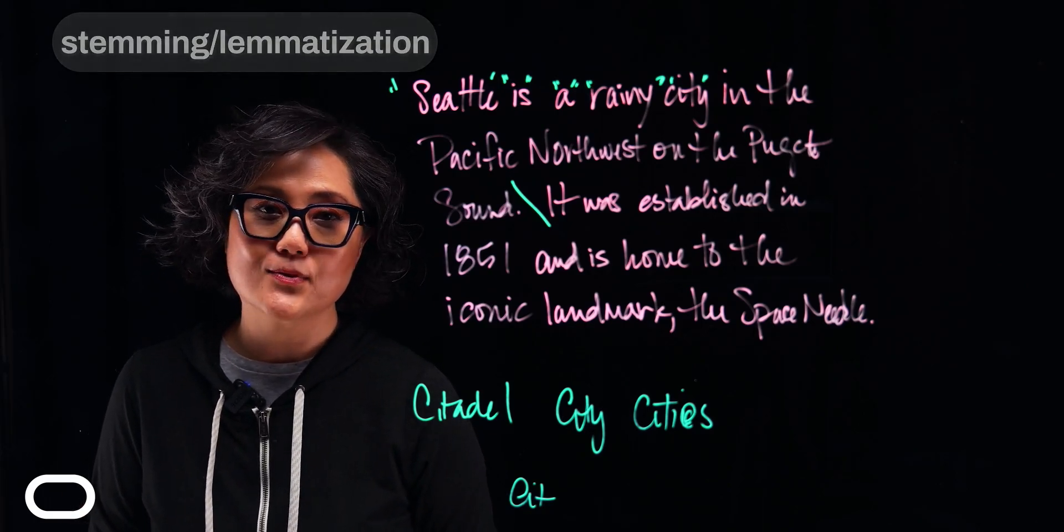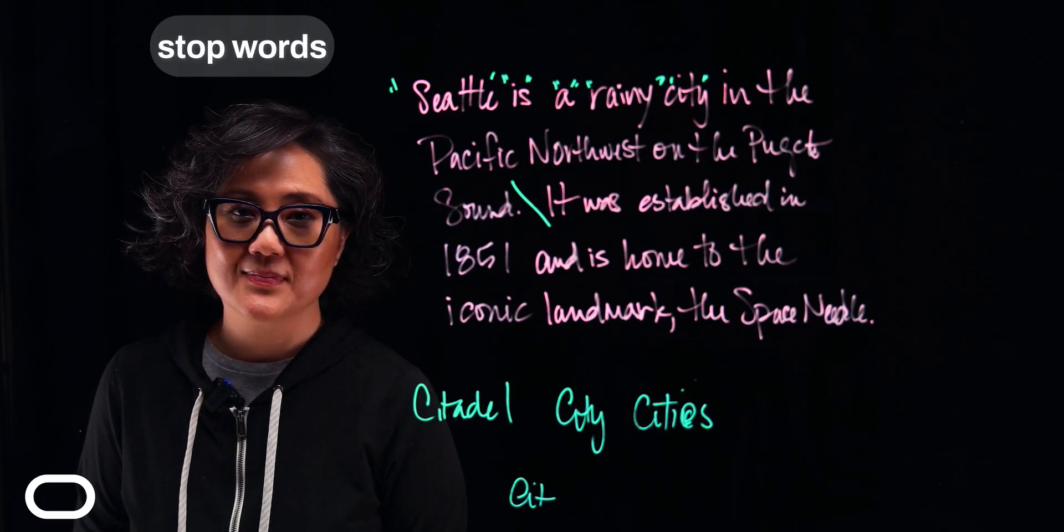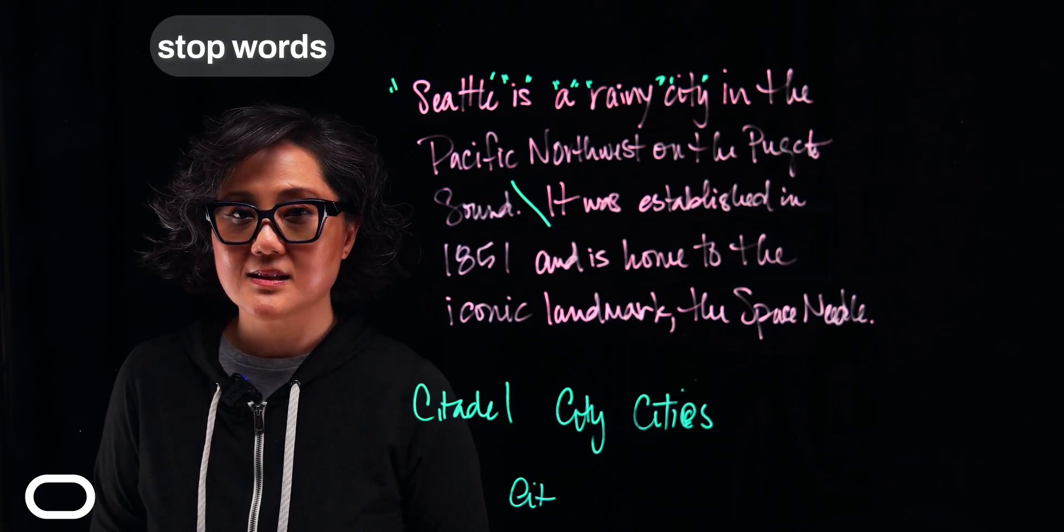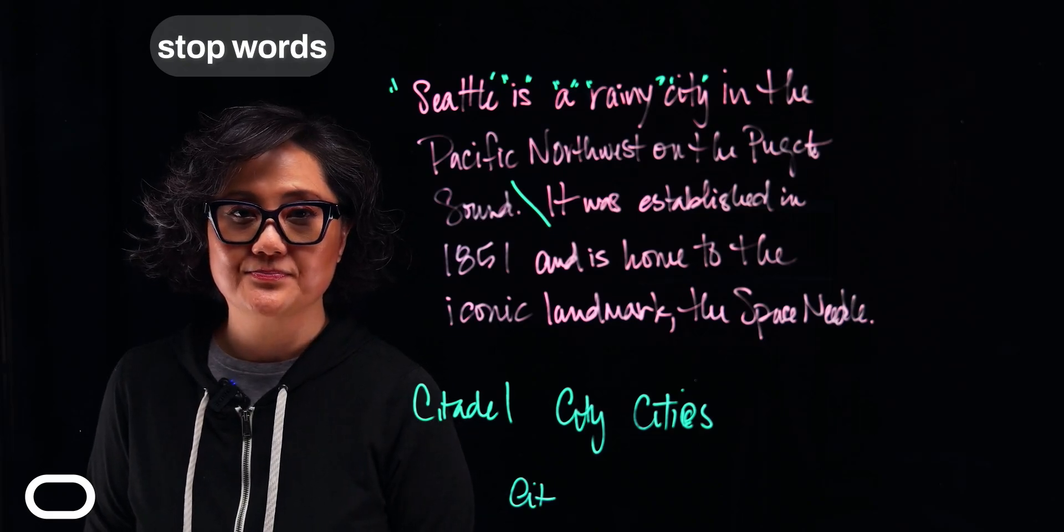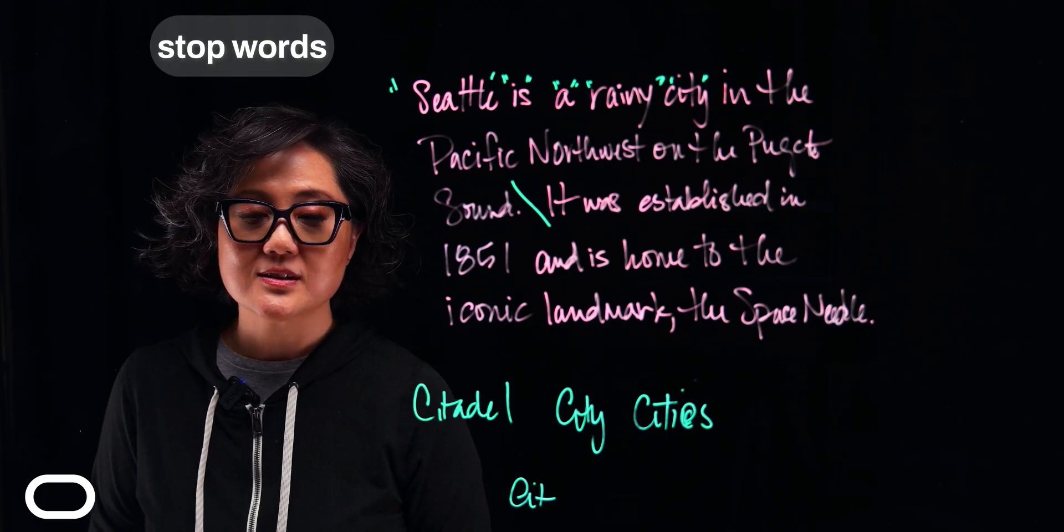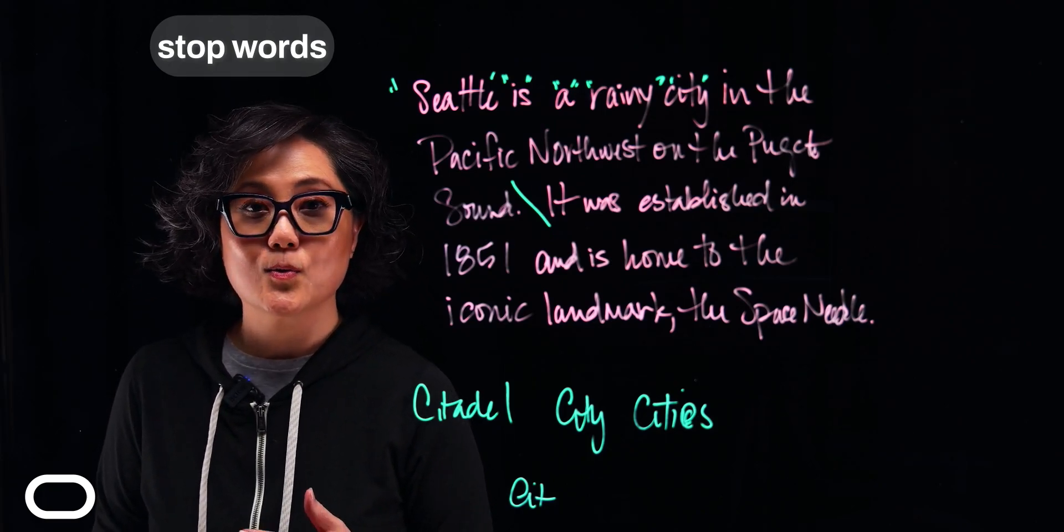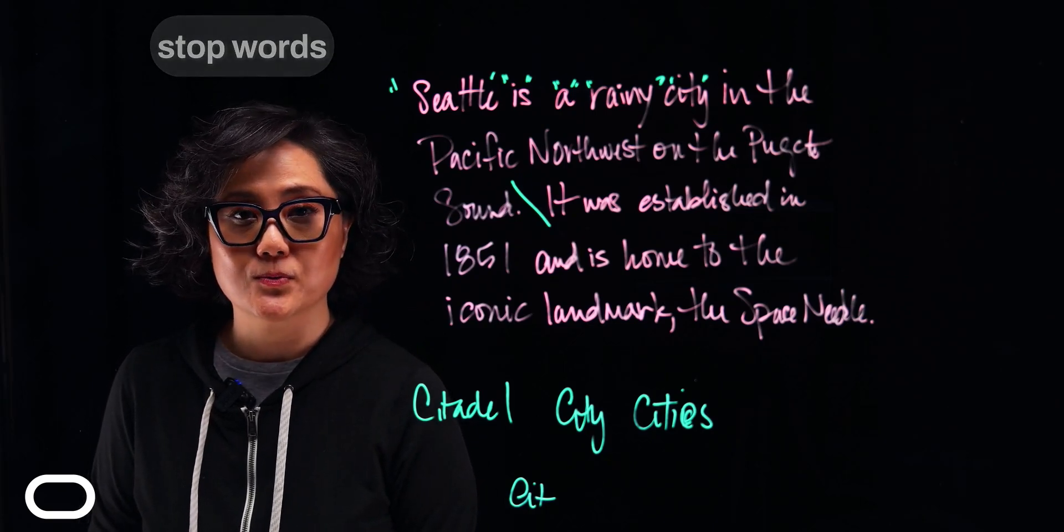The next step is stop words. This understands the meaning and context of the text and determines the importance of each word. In English, some words appear more frequently than others, such as is, a, or the, and those words are filtered out to focus on important words.